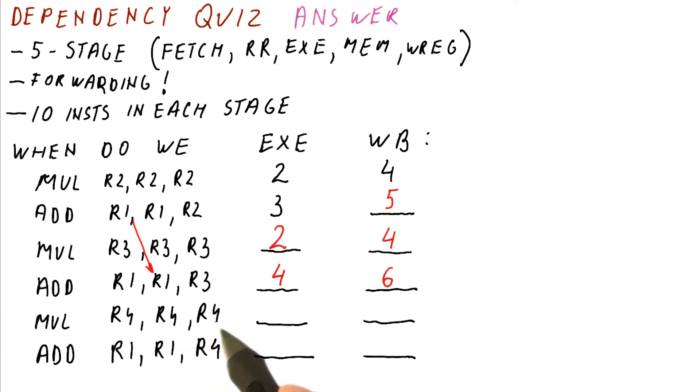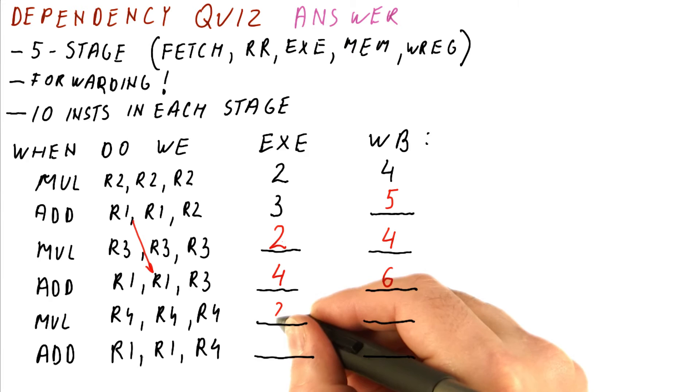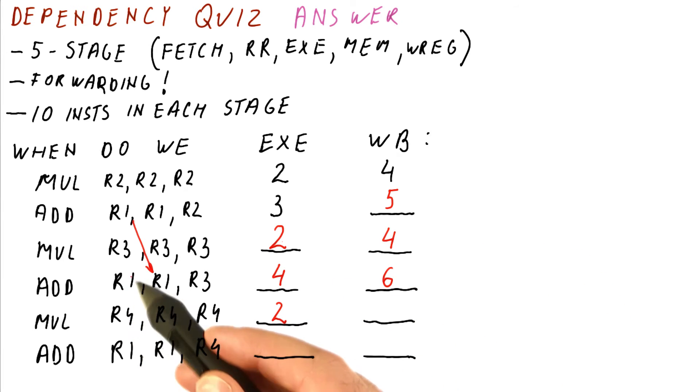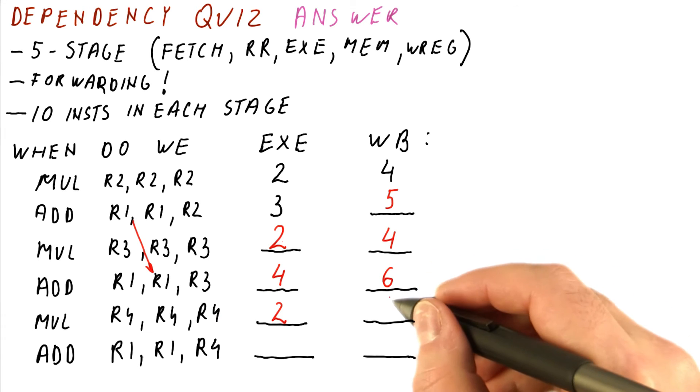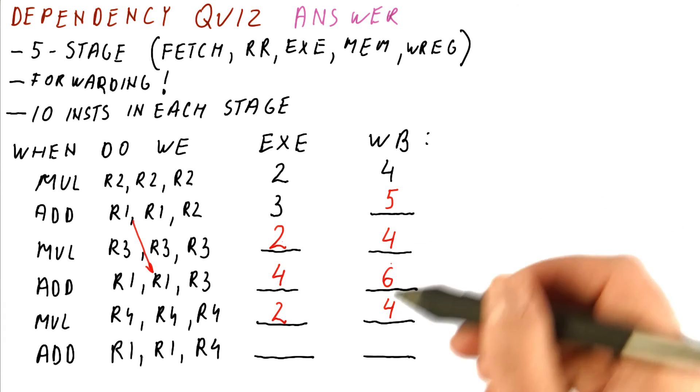Now let's look at the multiplication here. It's using R4. None of the other instructions are producing R4, so it can also execute in the second cycle. It produces R4. None of the previous instructions are writing it, so we don't have to wait for anything. So we can actually write our R4 in cycle four as well, just like this MUL here.